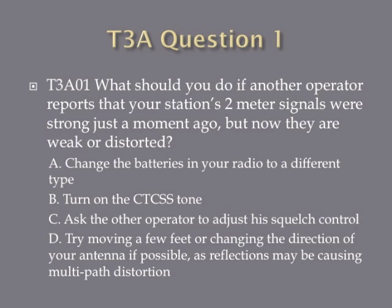Question 1: What should you do if another operator reports that your station's 2-meter signals were strong just a moment ago, but now they are weak or distorted? A. Change the batteries in your radio to a different type. B. Turn on the CTCSS tone. C. Ask the other operator to adjust his squelch control. Or D. Try moving a few feet or changing the direction of your antenna if possible, as reflections may be causing multipath distortion.